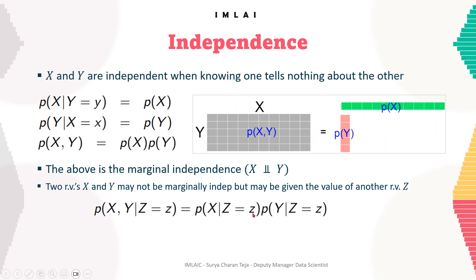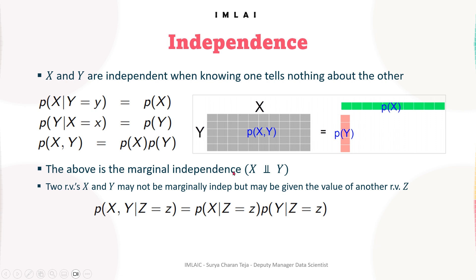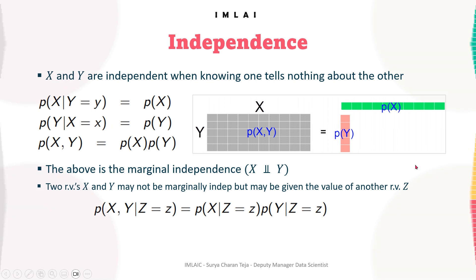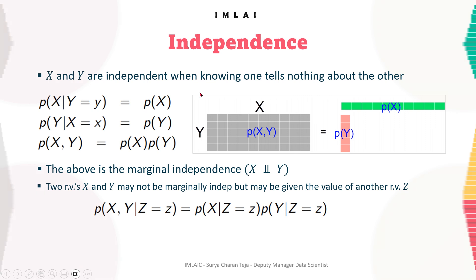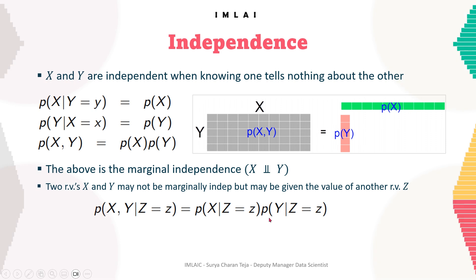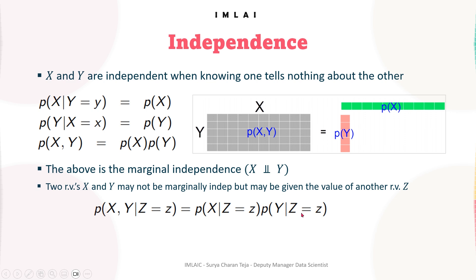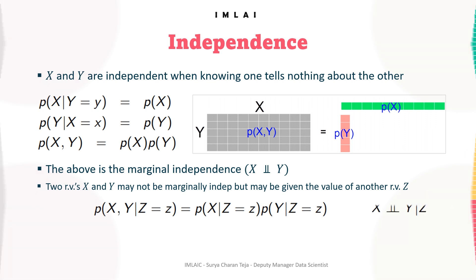Using conditional probability and marginalization with another random variable: both X and Y may be independent of each other, but they may be dependent on another random variable Z. In that case, instead of just P(X) multiplied by P(Y), the formula converts into P(X | Z = z) times P(Y | Z = z). This is how the third random variable Z comes into the picture.